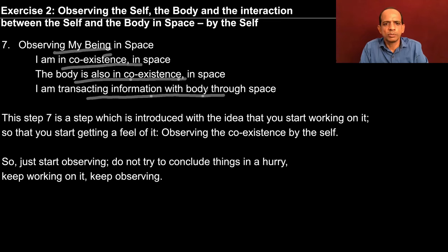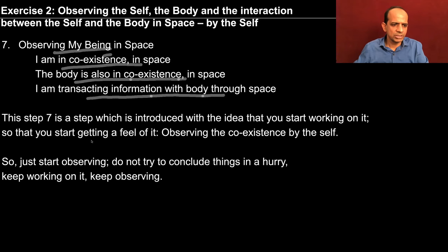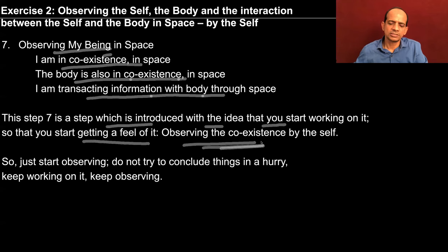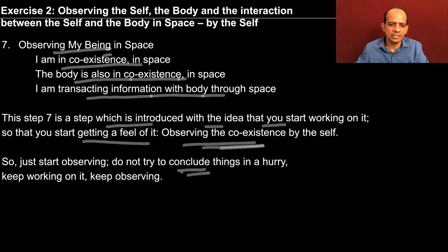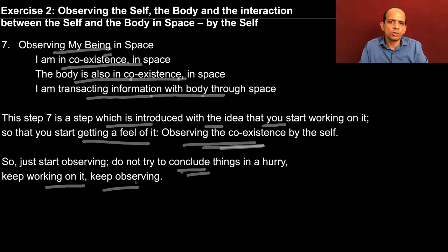Try to observe this — try to be aware of this. At least it can be part of your imagination; you can think about this, you can analyze this, and going further, you can observe this. Step 7 is a step introduced with the idea that you start working on it, so that you start getting a feel of it and start observing the coexistence by yourself. Just start observing — no need to conclude things in a hurry. It will take time, but keep working on it, keep observing. The more you are able to observe this and assign importance to it, you will get more clarity and develop your understanding.